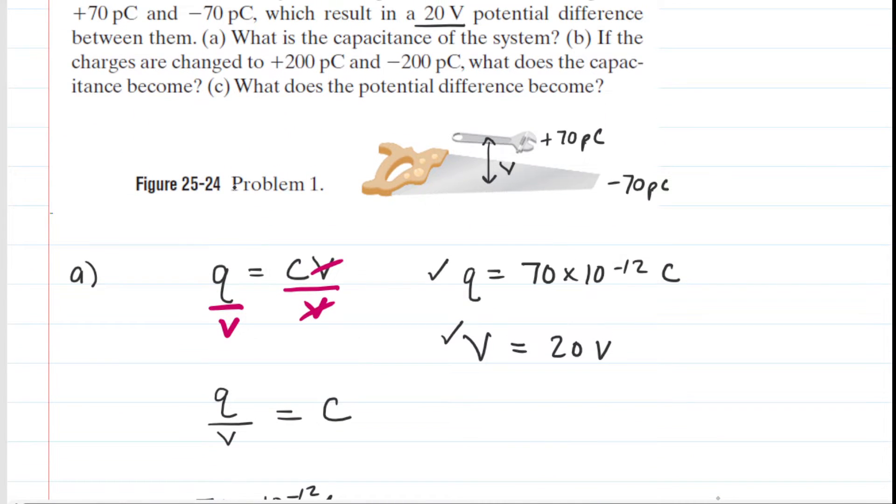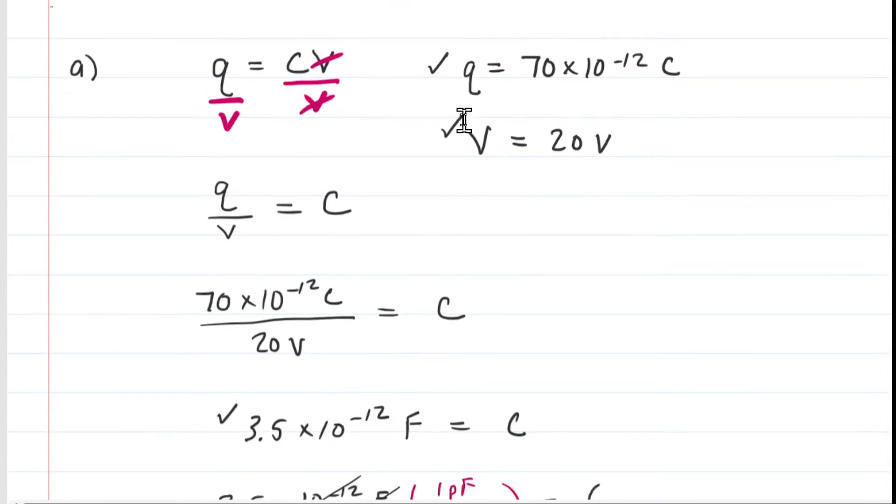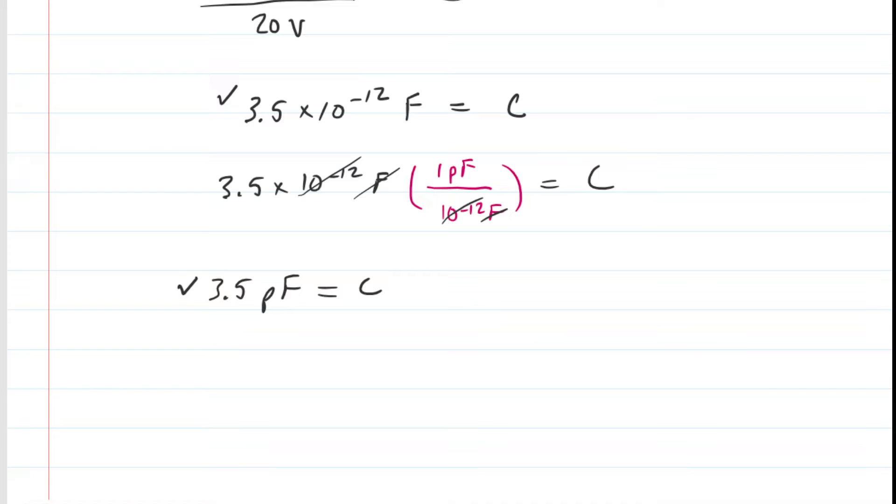In part B we are asked if the charges are changed to 200 picocoulombs and negative 200 picocoulombs, what does the capacitance become? Well the capacitance is an inherent property of the metal objects. So it actually doesn't matter if we increase the amount of charge on them, the capacitance is going to remain the same. So it's a bit of a trick question, but that's okay. That means it's easy.